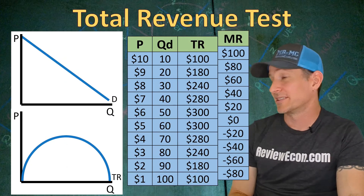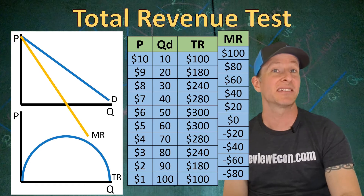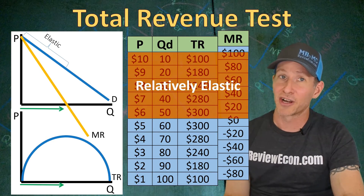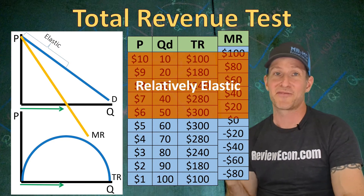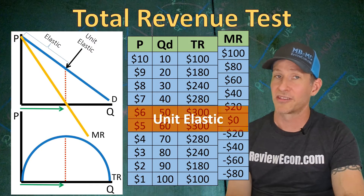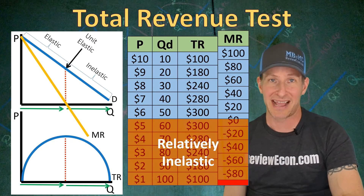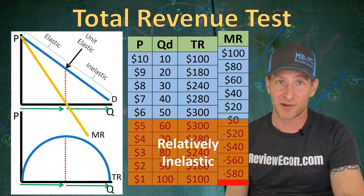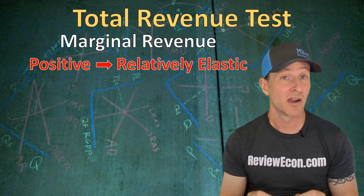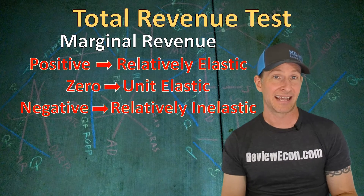Adding a marginal revenue column to the table and plotting marginal revenue below the demand curve shows us the elasticity of the demand curve above. When marginal revenue is positive, total revenue is increasing and the demand curve is elastic. Between six and five dollars on the table, total revenue doesn't change and marginal revenue is zero — when marginal revenue hits that axis, the corresponding point on the demand curve is the unit elastic point. When quantity continues to increase and price falls further, marginal revenue becomes negative, indicating total revenue is decreasing and the demand curve is inelastic in that range.